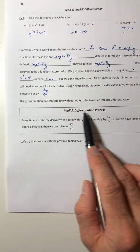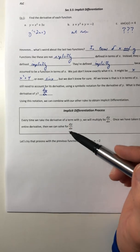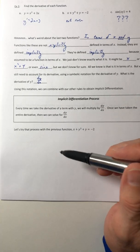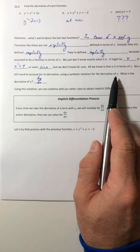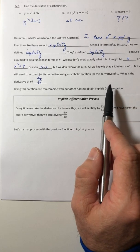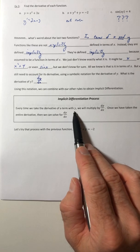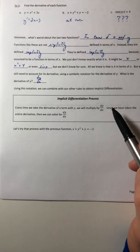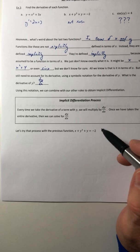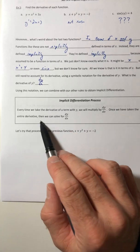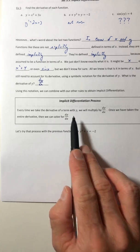All right, so using this notation, we can combine with our other rules to obtain implicit differentiation. So the process, it's a little bit weird at first. But you just got to remember that you still have to account for the derivative of y symbolically, because you don't know what y actually is. Every time you take the derivative of a term with y, you need to multiply by dy dx.